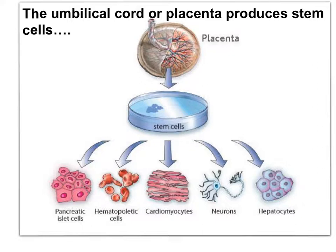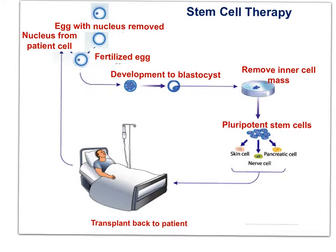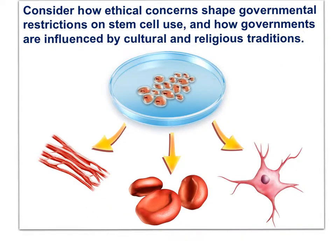Other sources of stem cells include the placenta or umbilical cord, which would remove the ethical concerns of using embryos. Scientists are also working on harvesting stem cells from the body of the person requiring the new tissues. New techniques are being developed where the nucleus of a differentiated cell of the patient is placed into an enucleated egg, and the resulting embryo is used to develop tissues transplanted back into the patient. Ethical concerns shape governmental restrictions on stem cell use, influenced by cultural and religious traditions.